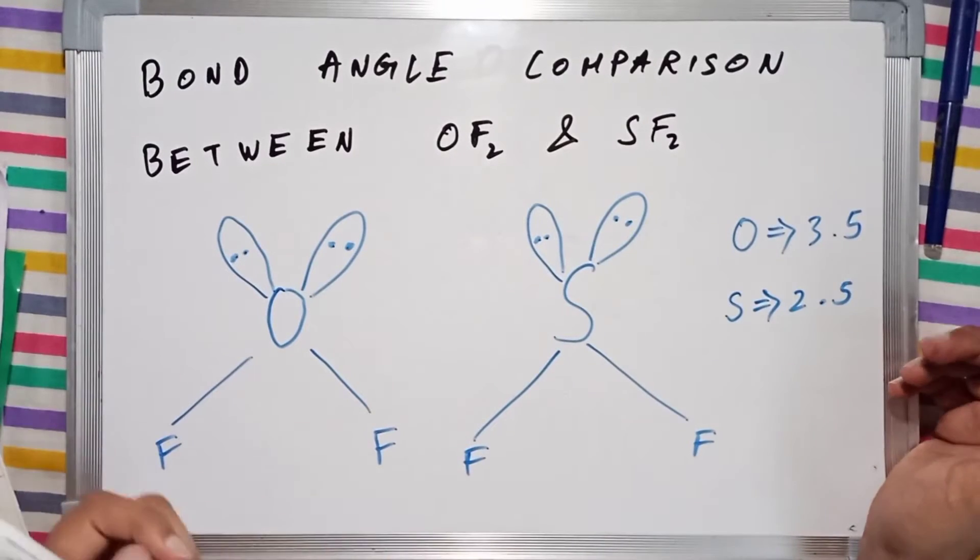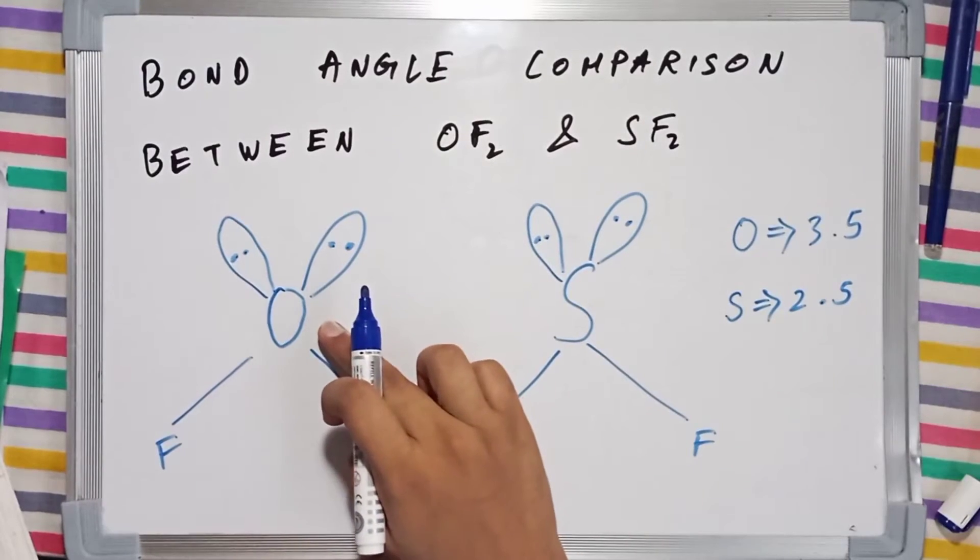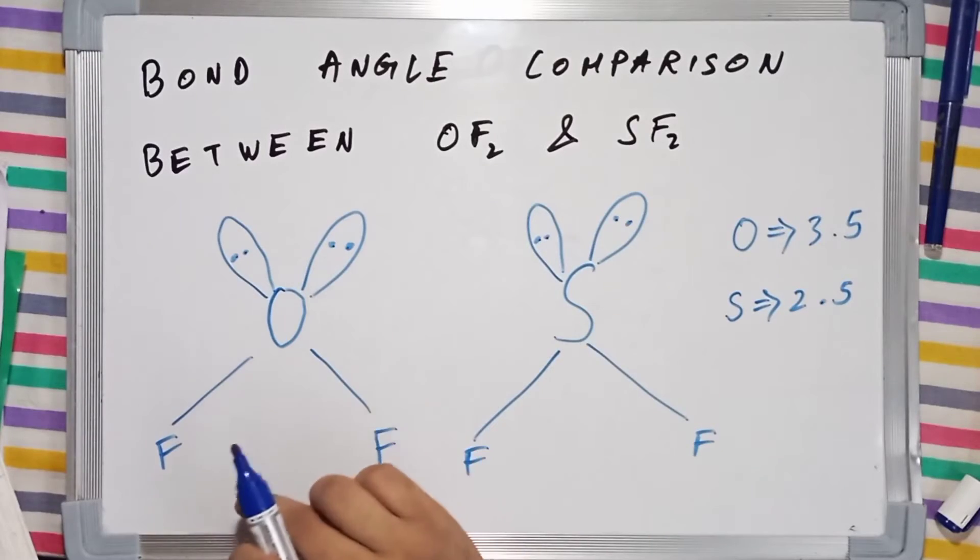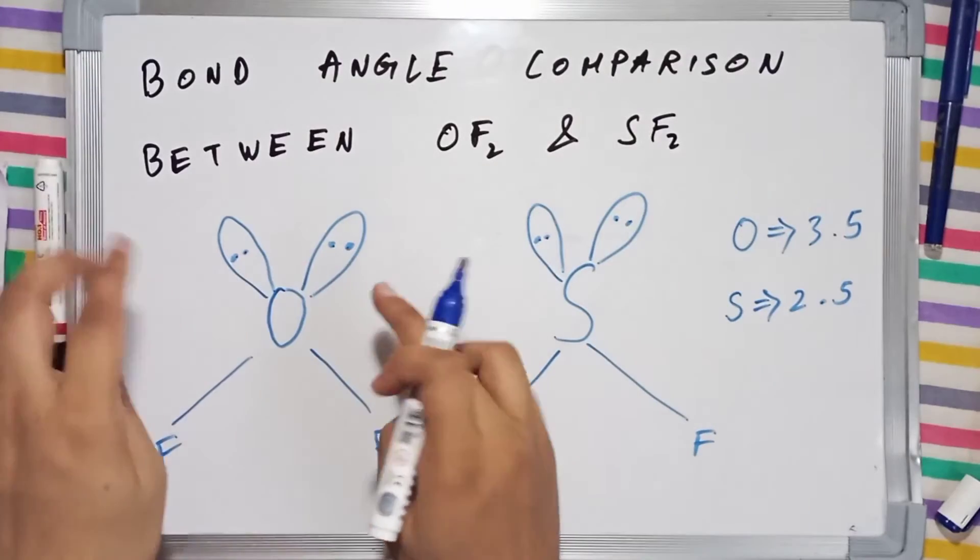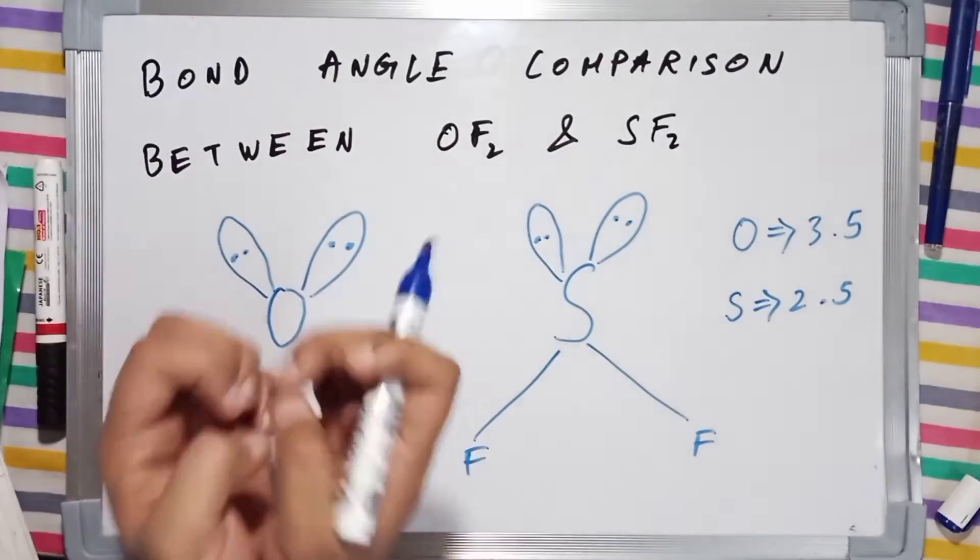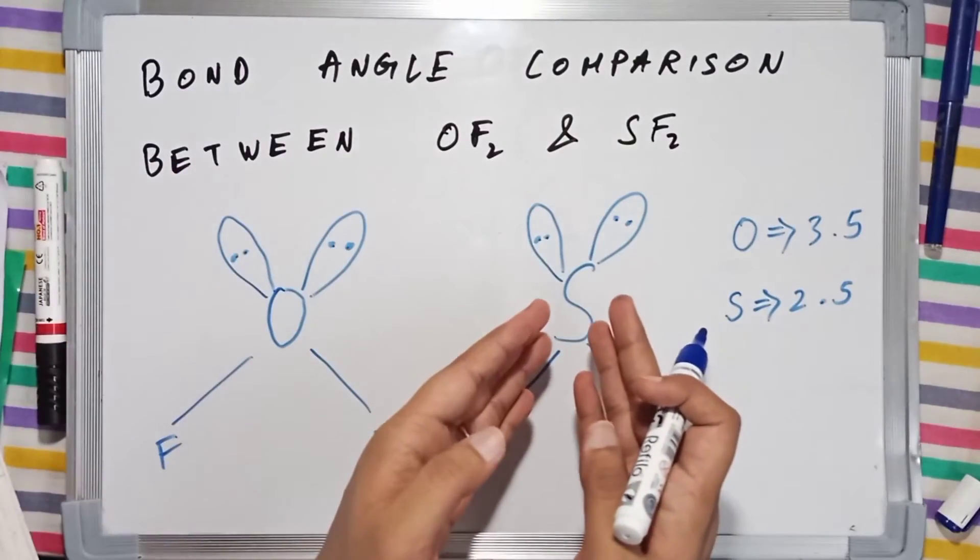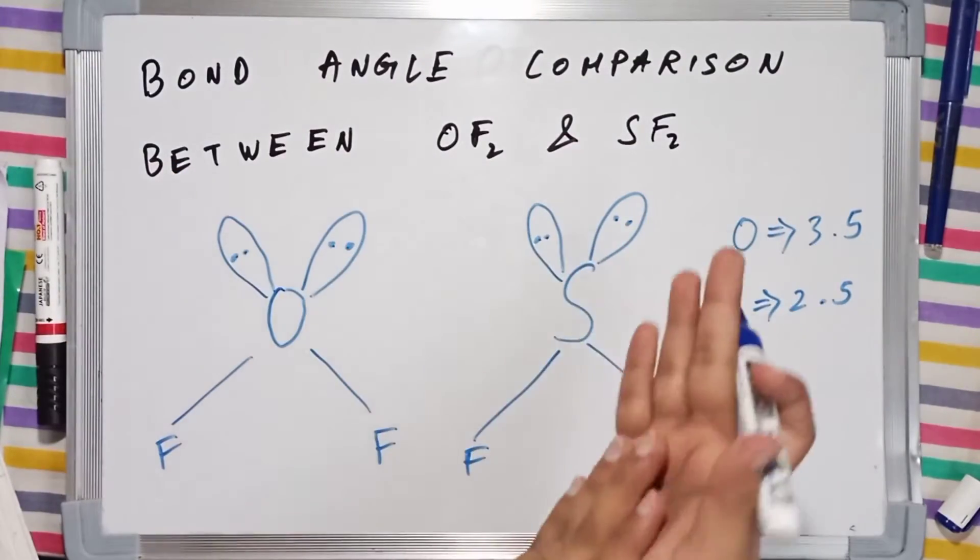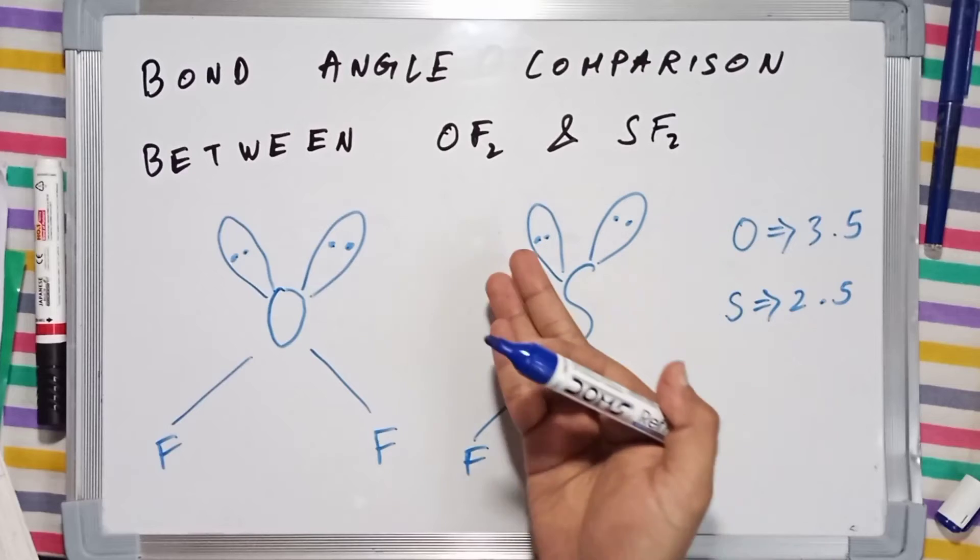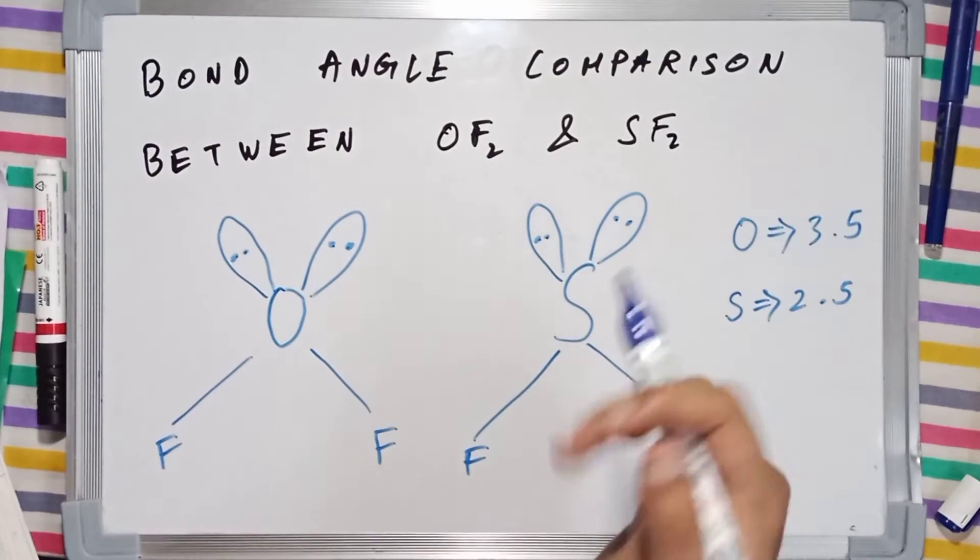As oxygen has higher electronegativity, it will hold these lone pairs much more tightly to itself, whereas sulfur won't be able to hold these lone pairs as tightly.